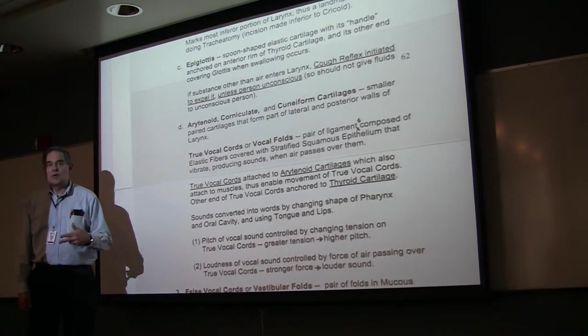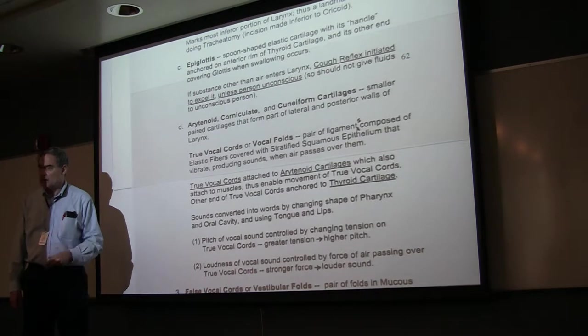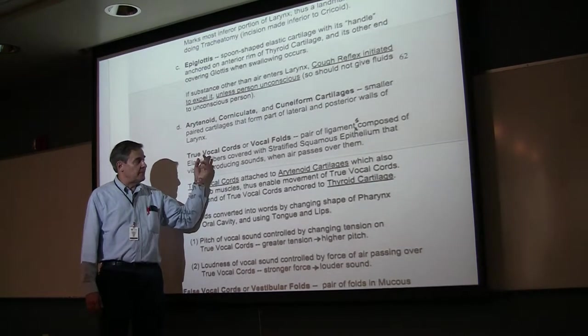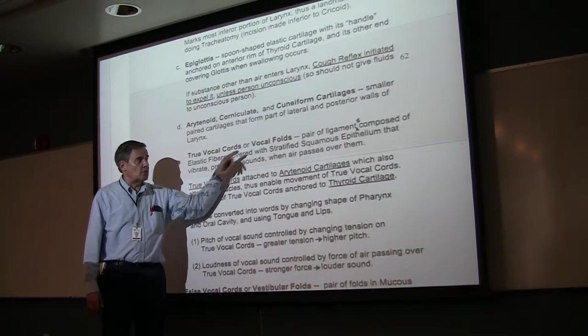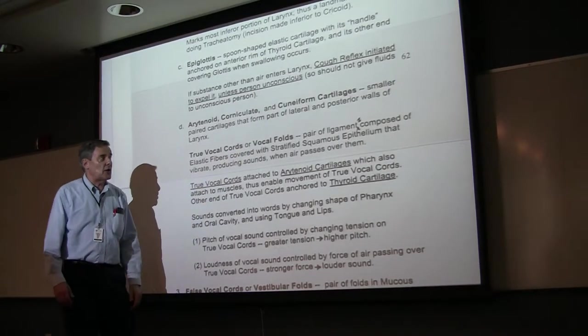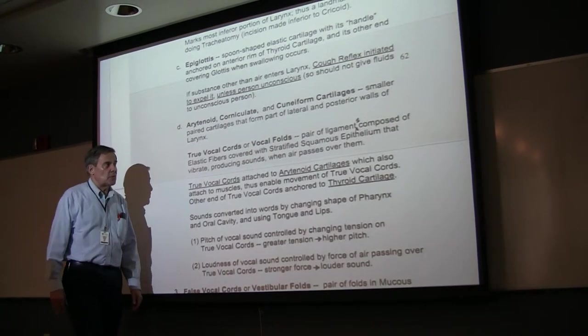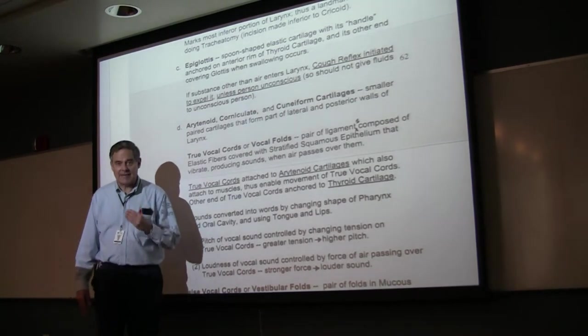Then we have, as you know, some folds in the interior of the larynx. The inferior ones are the true vocal cords or vocal folds. These are basically elastic ligaments. They vibrate when air passes over them. This is what allows us to make sounds.